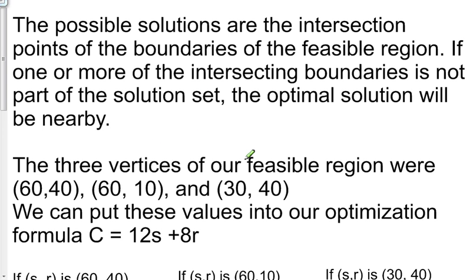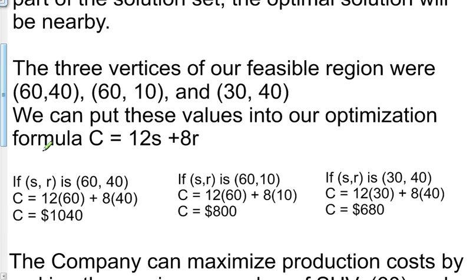The three vertices of our feasible region were 60, 40, 60, 10, and 30, 40. We can put these values into our optimization formula. So if s, r is 60, 40, that's our first one here, is 60, 40, 12 times 60 plus 8 times 40 is equal to $1,040 for our production cost.